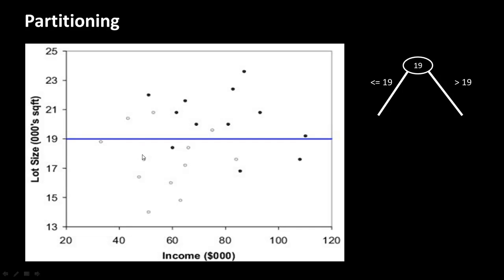You can look at the correspondence between what we did here and the decision tree. By putting the partition here, we've created the first branch of our decision tree — we divided the root node on the lot size value of 19. The cases less than or equal to 19 are here, and the cases greater than 19 are here. So we are really building the tree by doing partitioning.